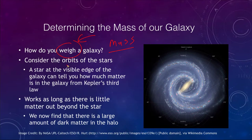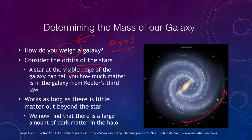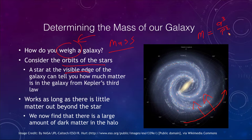One way to do this is to consider how the stars are orbiting. If we look at a star at the visible edge of a galaxy, that can tell us how much matter is within the galaxy based on Kepler's third law. If we find a star way off at the edge and observe its orbital period, we can use Kepler's law — mass equals a³ over p² — where the mass of the galaxy in solar masses equals the semi-major axis in astronomical units cubed divided by the period in years squared.